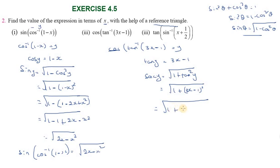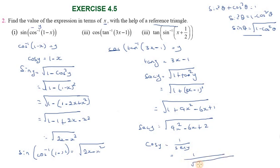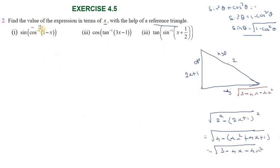So sec y equals square root of 1 plus (3x minus 1) squared, which expands to square root of 1 plus 9x squared minus 6x plus 1, giving square root of 9x squared minus 6x plus 2. Therefore cos y equals 1 divided by sec y, which equals 1 over square root of 9x squared minus 6x plus 2.